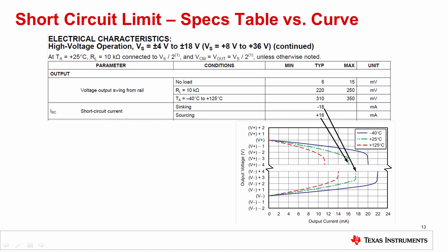The short circuit output current limit is given in the datasheet table and can also be inferred from the claw curve. In this example, the table lists minus 18 milliamps for the sinking limit and plus 16 milliamps for the sourcing limit. This roughly correlates to the point on the claw curve at 25 degrees C where it bends sharply due to the current limit circuitry turning on. It's important to note that the current limit changes over temperature — at high temperature it turns on at a much lower current level. The short circuit limit in the table is a typical value and will vary due to semiconductor process variations. For a robust design, avoid circuits with output currents near the limit; at room temperature, the typical short circuit current limit may shift by up to plus or minus 20%.